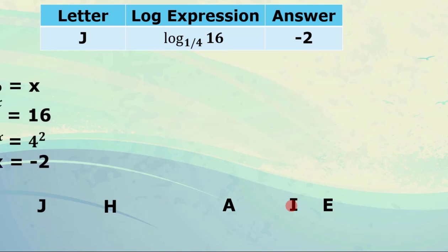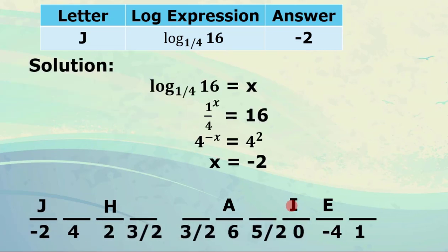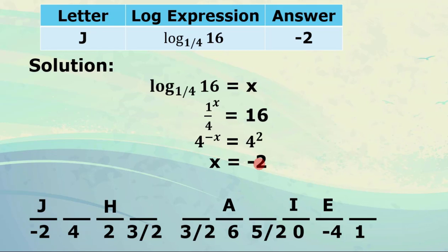For the fifth expression, log of 16 to the base 1 fourth equals x, so 1 fourth raised to x equals 16. We rewrite 1 fourth raised to x as 4 raised to negative x, and 16 equals 4 squared. Therefore negative x equals 2, and multiplying both sides by negative 1 gives x equals negative 2. We write the corresponding letter next to negative 2.